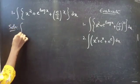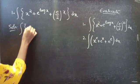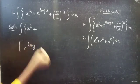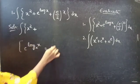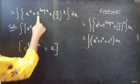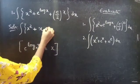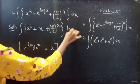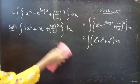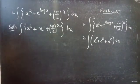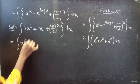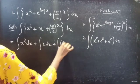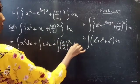Solution: integral of x squared plus — since we know that e power log x to the base e equals x — so we can write it as x plus e by 2 whole power x, into dx. This equals the integral of x squared dx plus the integral of x dx plus the integral of e by 2 power x dx.